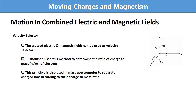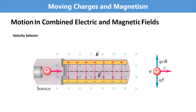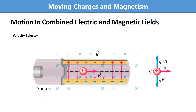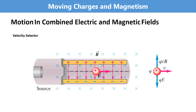J.J. Thomson used this method to determine the ratio of charge to mass of an electron. This principle is also used in a mass spectrometer to separate charged ions according to their charge-to-mass ratio. In the figure, you can see the actual working of the velocity selector, with crossed electric and magnetic fields where only particles of a certain velocity emerge from the region.